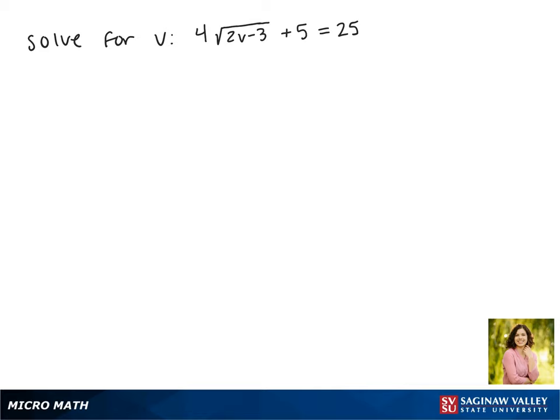Today we'll be solving for v in the equation 4 times the square root of 2v minus 3 plus 5 equals 25.